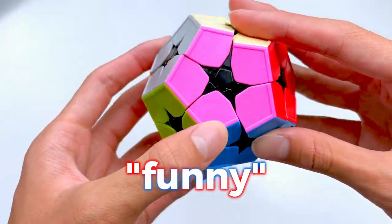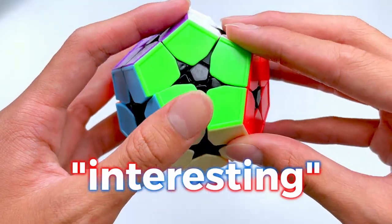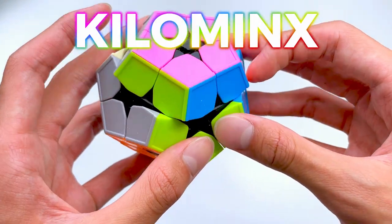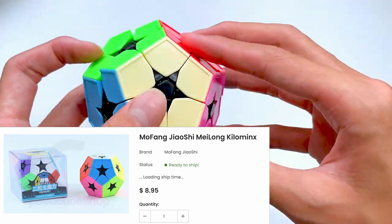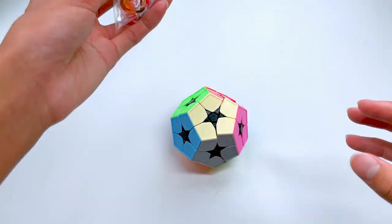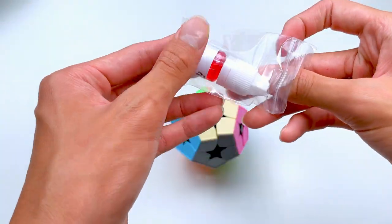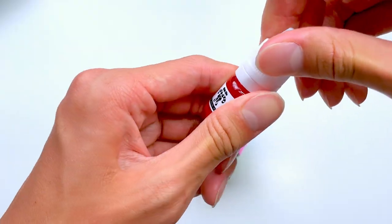I thought it would be interesting if I had a non-WCA puzzle during my Christmas unboxing. So I got this Kilominx, this is the Meilong Kilominx. I believe the turning is quite stiff right now, so I think I'm just going to put a bit of these lubes. I think I'm going to put a little bit of candy cane, because after all it is the Christmas season. Let's get a little bit of this lube into the cube.